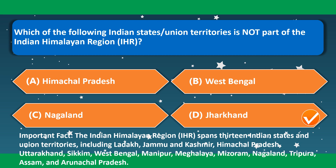Which of the following Indian states or union territories is not part of the Indian Himalayan region? This is Jharkhand. The Indian Himalayan region spans 13 Indian states and union territories, including Ladakh, Jammu and Kashmir, Himachal Pradesh, Uttarakhand, Sikkim, West Bengal, Manipur, Meghalaya, Mizoram, Nagaland, Tripura, Assam and Arunachal Pradesh.